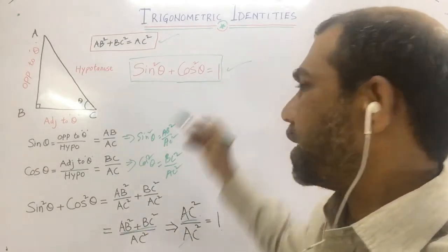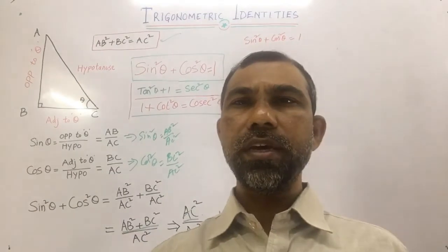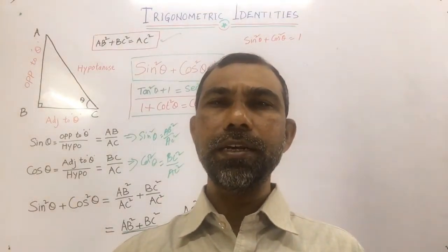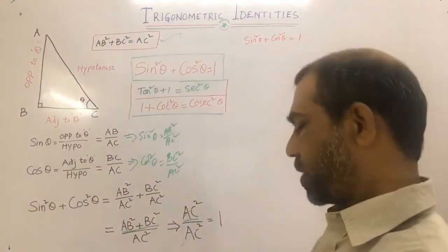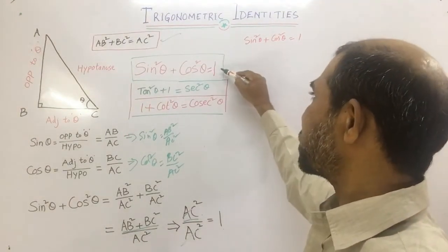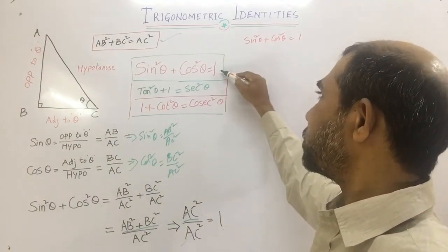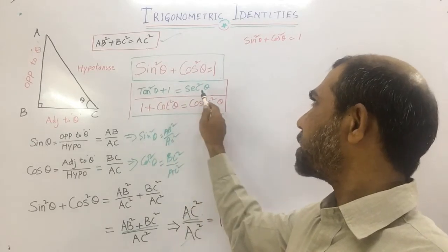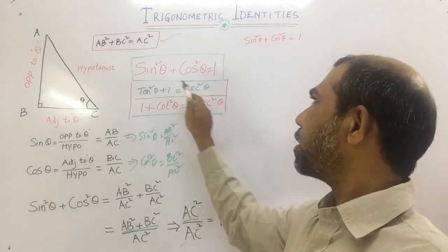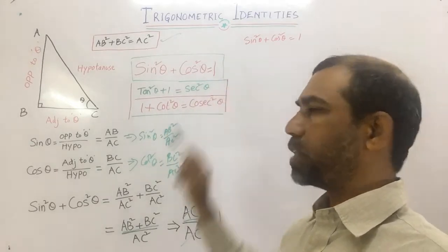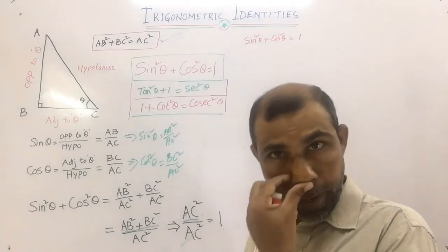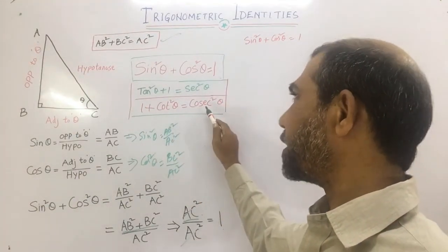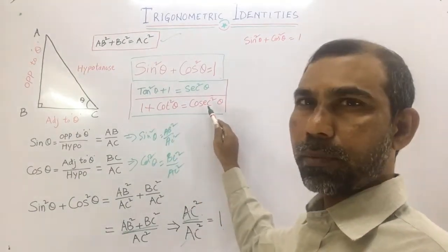The first identity is proved. We have three basic trigonometric identities. The first is sin²θ + cos²θ = 1. The second is tan²θ + 1 = sec²θ. The third is 1 + cot²θ = cosec²θ.